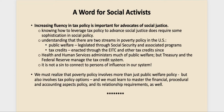It isn't enough to have big, new, and good ideas — you've got to know how to get them implemented and have enough connections to know where to put them. It's not a sin to connect to people of influence in our system. We need to understand that there are two streams in poverty policy in the United States: the public welfare stream legislated through social security and associated health and human services programs, and tax credits enacted through the EITC and other credit programs managed by Treasury and the Federal Reserve — not HHS. Don't just work HHS; look at other departments in the federal government when thinking about advocacy. Poverty policy involves more than just public welfare policy — it also involves tax policy options, and we must master the financial, procedural, and accounting aspects of policy.